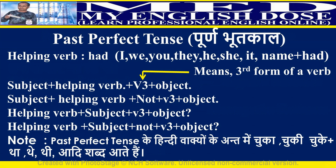Past perfect tense: the work had been completed in the past. Helping verb is 'had'; use 'had' with all nouns and pronouns. Positive: subject plus helping verb plus third form of a verb plus object. Negative: subject plus helping verb plus not plus third form of a verb plus object. Interrogative: helping verb plus subject plus third form of a verb plus object. Interrogative negative: helping verb plus subject plus not plus third form of a verb plus object.